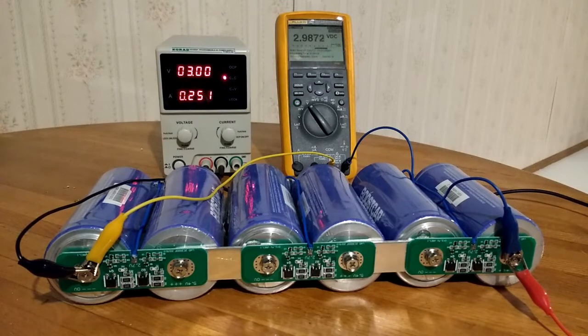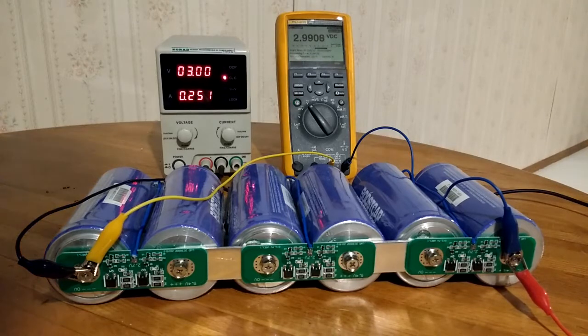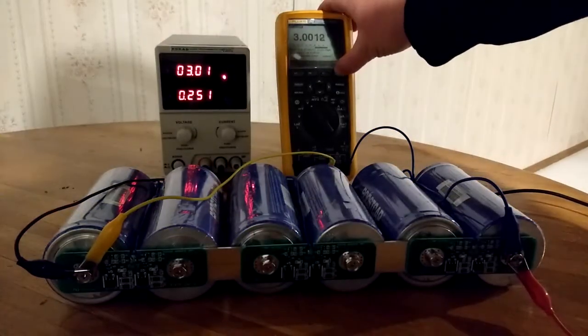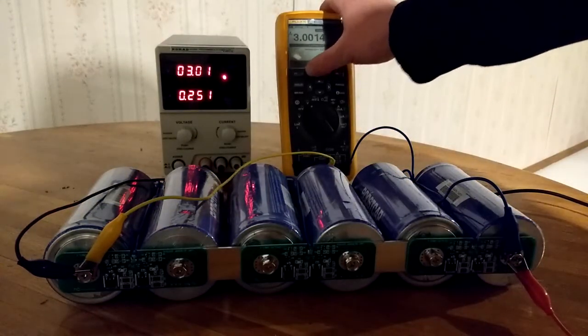We can see that we're approaching 3 volts of charge on the capacitor bank. As soon as it hits the 3 mark, I'm going to shut off the data acquisition. So we're over 3 volts, we stop, save everything.